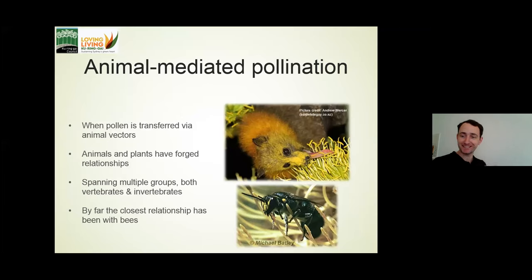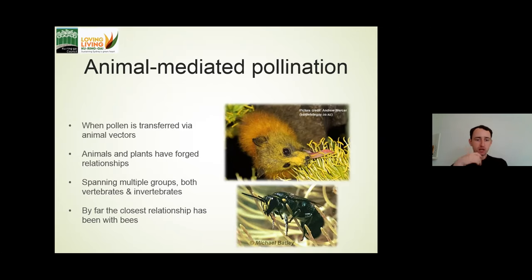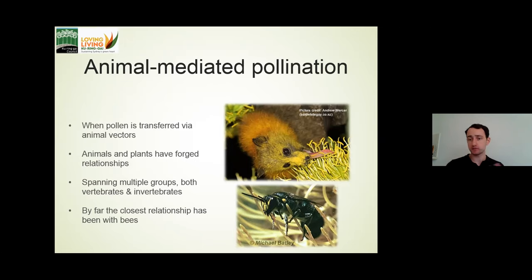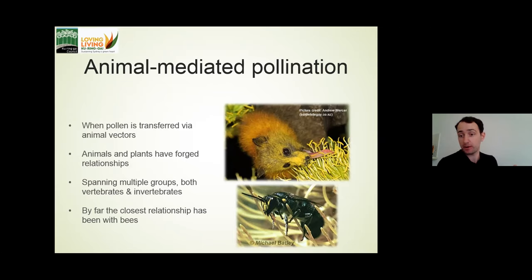Moving on to animal-mediated pollination, this is where pollen is transferred through an animal vector. Animals and plants, over time, forge relationships together. Often when we think about pollinators, we primarily think about bees, but the relationships between pollinators and plants span many groups. There's a lovely picture here of a grey-headed flying fox smothered in pollen — incredibly important pollinators.